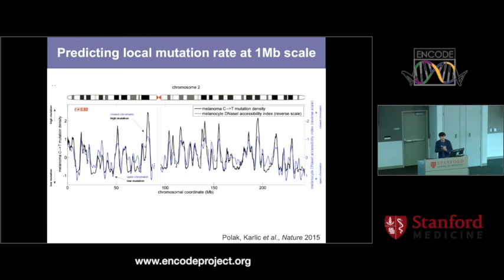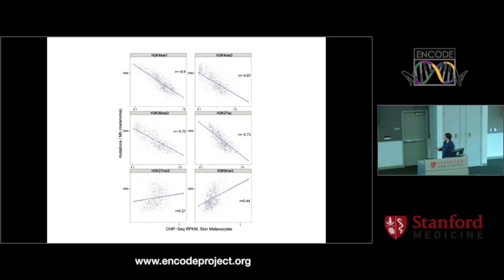Looking at chromatin, at the one-megabase scale, we and others find dependency of mutation density in cancers on chromatin accessibility. This is DNase data shown here for melanoma. The effect is not limited to DNase hypersensitivity — we don't know the causality or which specific biological factor drives it — but the general observation is that all activating marks, marks of active chromatin and active genome, anticorrelate with mutation density, while repressive marks positively correlate with mutation density.